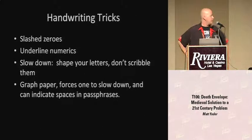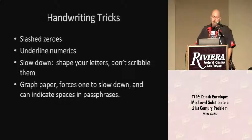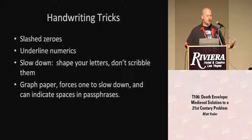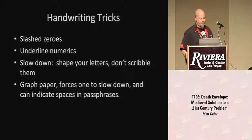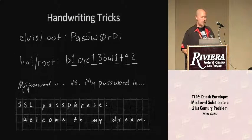Some thoughts if you're going to use handwriting: obviously, you want to slash your zeros so people know they're zeros. Same deal, frequently just underline the numerics so people know if something's a one or an L. Slow down so you're not writing too fast and people can read your letters — once they've opened your envelope, they can't necessarily know what you meant when you wrote that down. Another good option is graph paper: this can indicate spaces, it means there's supposed to be a letter there, and it slows you down.